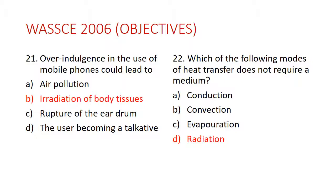Question 21: Over-indulgence in the use of mobile phones could lead to — the answer is irradiation of body tissues, meaning you are going to expose yourself to radiations, a lot of radiations. It's been advised not for us to have our phones very close to our bodies because our phones release electromagnetic radiation.